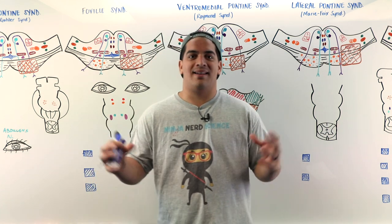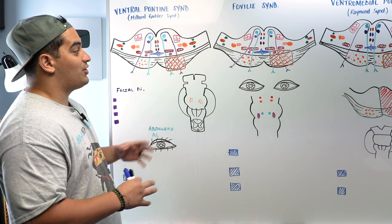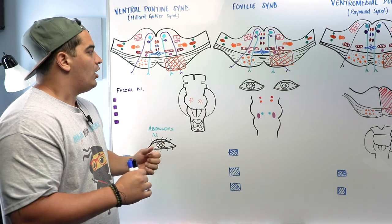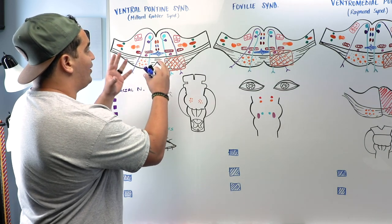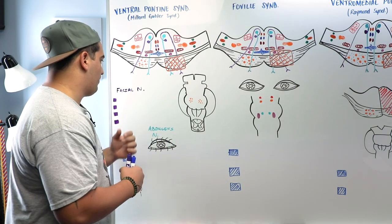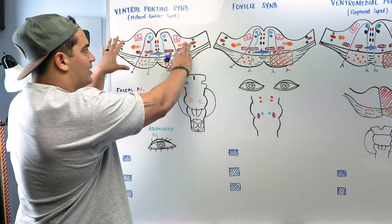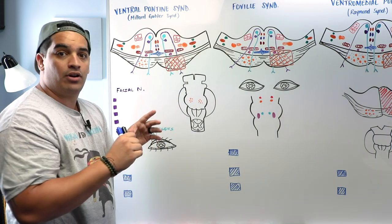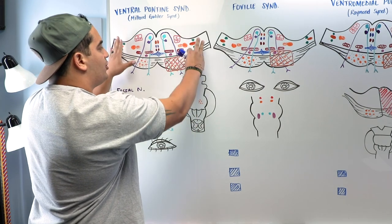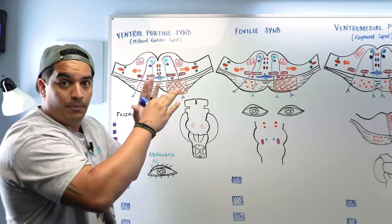In this video we're going to talk about pontine lesions. We're going to go through a bunch of different lesions, starting with ventral pontine syndrome, also referred to as Millard-Gubler syndrome. We'll take a cross-section of the pons — if you haven't already, go watch our video on the neuroanatomy of the pons where we go over all the structures inside the pons, what their names are, and what they do.